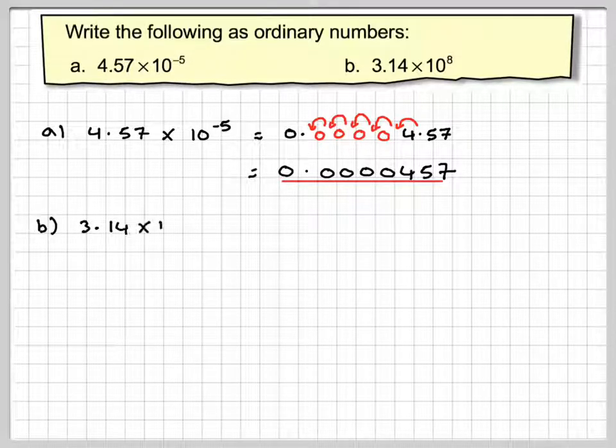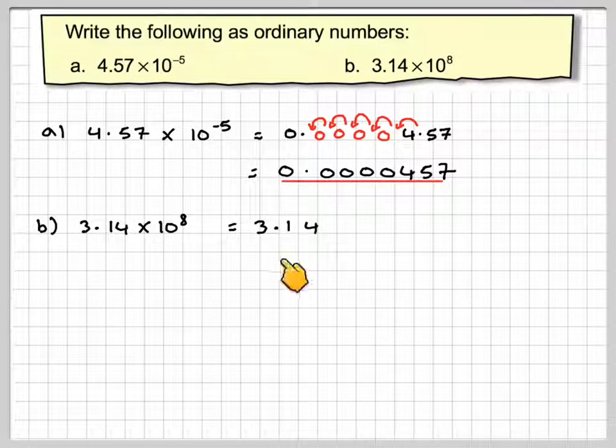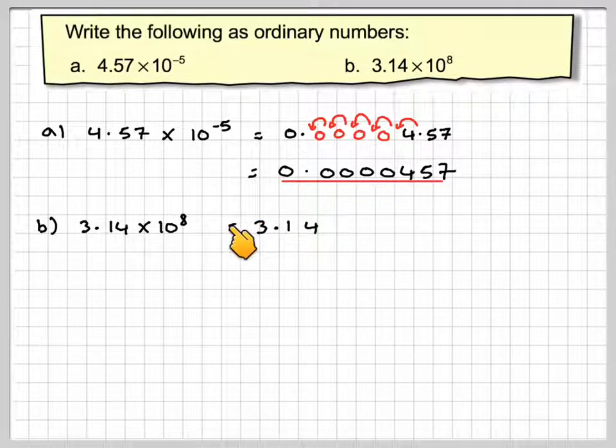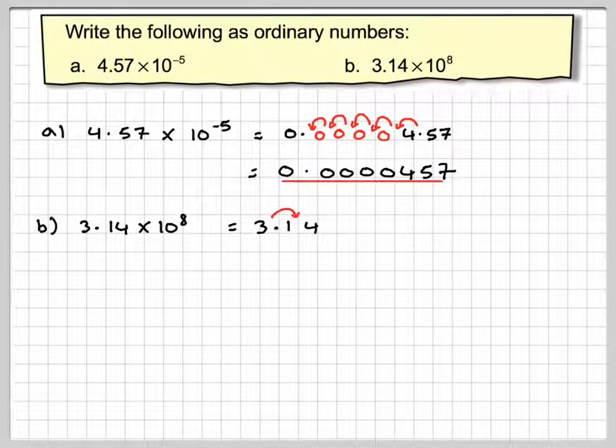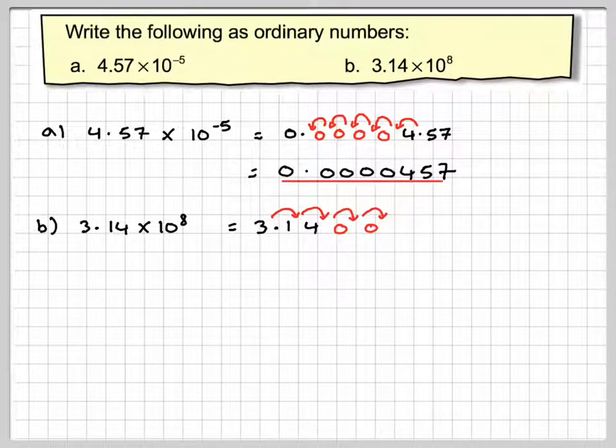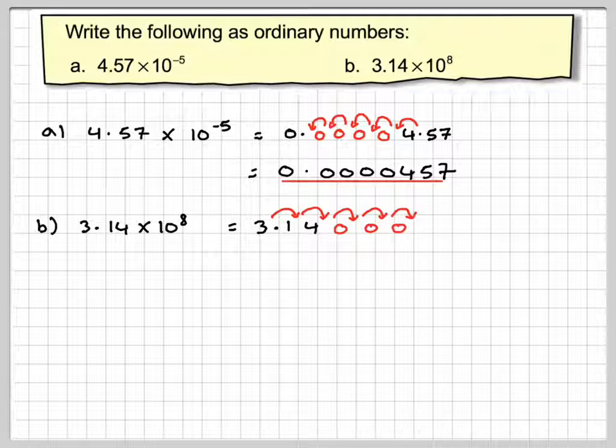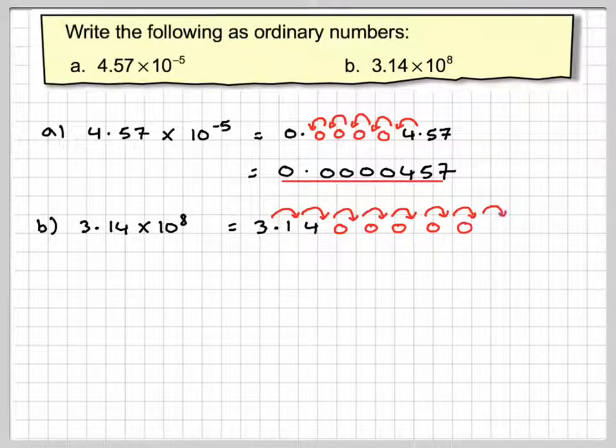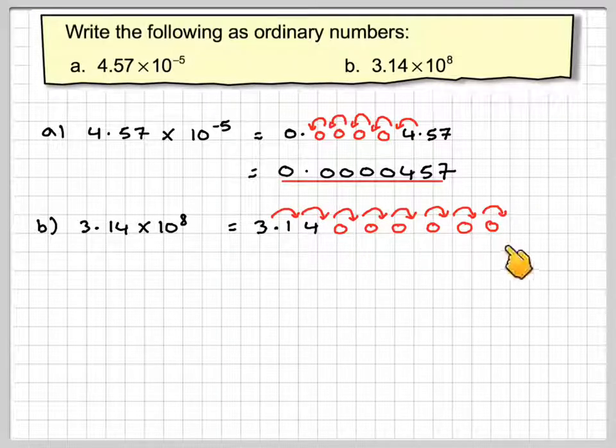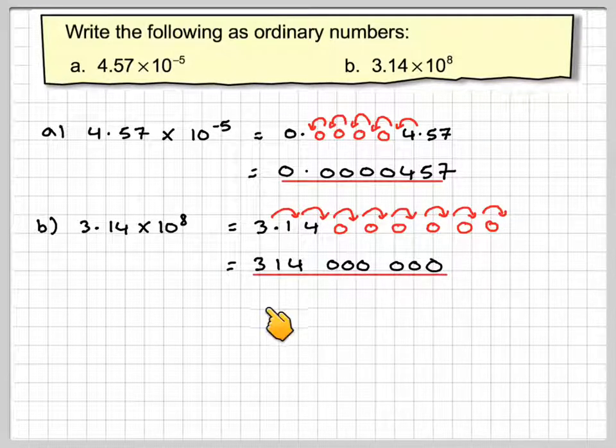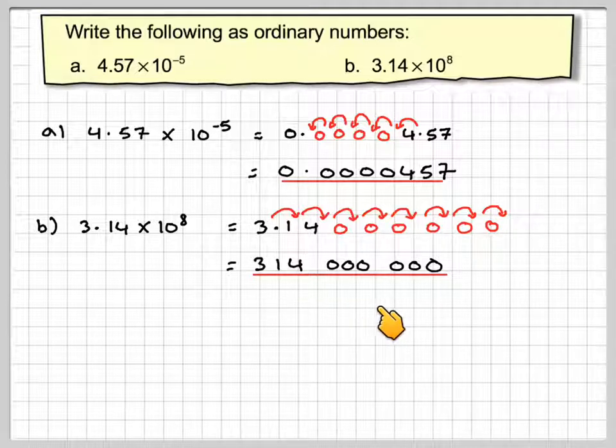Part B, 3.14 times 10 to the 8. I'm going to write 3.14. Instead of moving the decimal point this way, because it's plus 8, I'm going to move it this way. So it's going to be 1, 2, 3, 4. And every time there's a missing number, I need to put in a 0. So it's 1, 2, 3, 4, 5, 6, 7, 8. So it says 8 there. So my decimal point will move down to here. So the final answer will be 314 million.